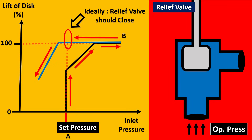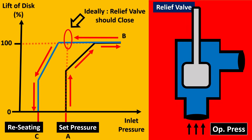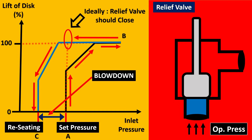Why is this happening? Eventually the pressure will go even lower, and only when it reaches its reseating pressure — let us call it point C — is where the relief valve will actually close and stop relieving fluid out. This difference between the reseating pressure and the set pressure is what is called blowdown.